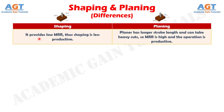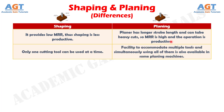Number 6: Shaping operation provides low material removal rate, thus shaping is less productive, whereas planer has longer stroke length and can take heavy cuts, so material removal rate is high and the operation is productive. And Difference Number 7: Only one cutting tool can be used at a time in shaping operation, whereas the facility to accommodate multiple tools and simultaneously using all of them is also available in some planing machines.